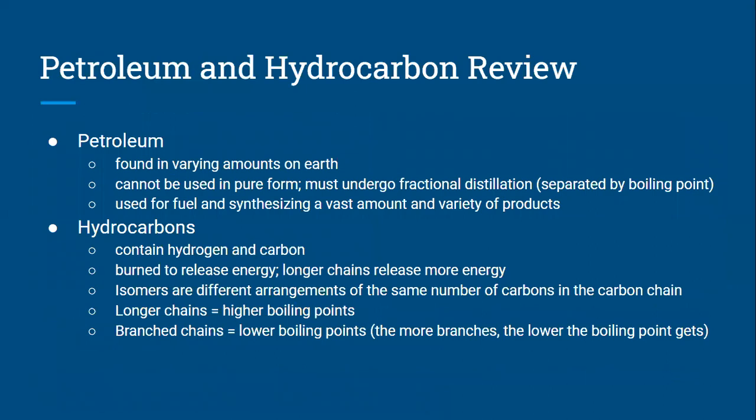Let's review. Petroleum can be found in varying amounts on Earth and in different regions, and we cannot use it in its pure form — it must undergo fractional distillation, where it gets separated by its boiling point. Petroleum is used for fuel and for synthesizing a large variety of products. Hydrocarbons are molecular compounds that contain hydrogen and carbon; they are burned to release energy, and longer chains release more energy. Isomers are different arrangements of the same number of carbons. A longer chain will have a higher boiling point, and branched chains have lower boiling points — the more branches, the lower the boiling point. Thank you for listening.